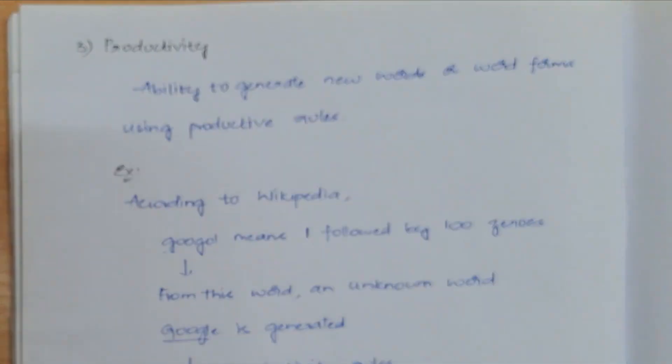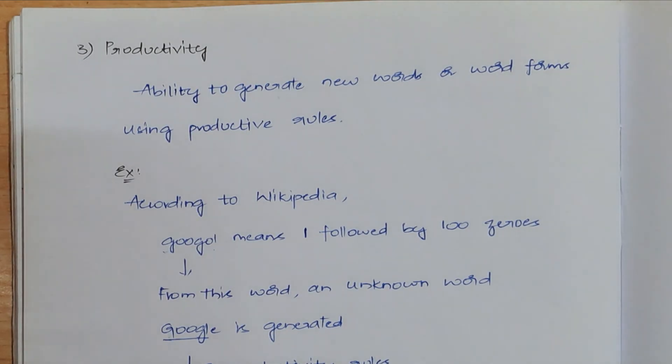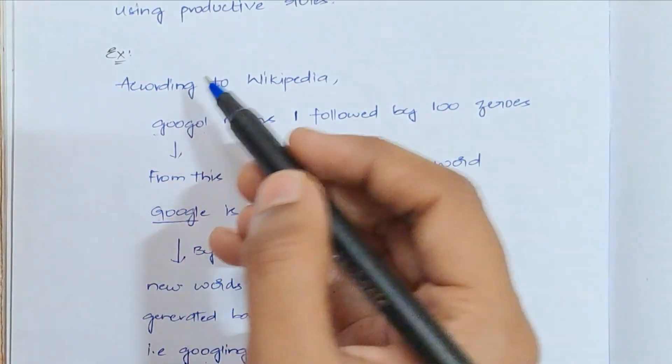And now the third one is productivity. What is meant by productivity? Productivity is nothing but it will generate new words by taking some unknown word. Let's take an example of this. Let's take an example now.